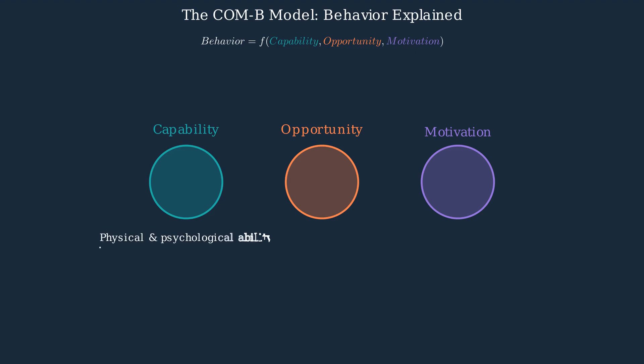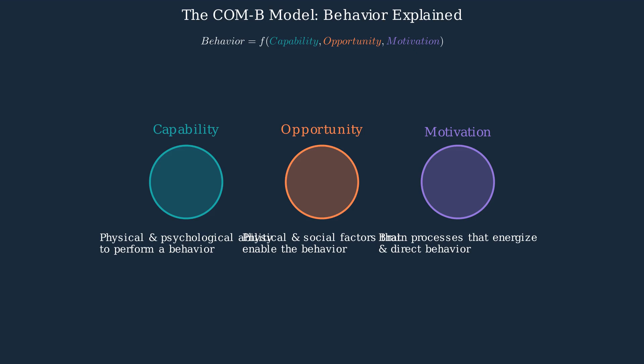Capability refers to both the physical and psychological ability to perform a behavior. Opportunity encompasses the physical and social factors in our environment that make the behavior possible. Motivation includes all brain processes that energize and direct our behavior.